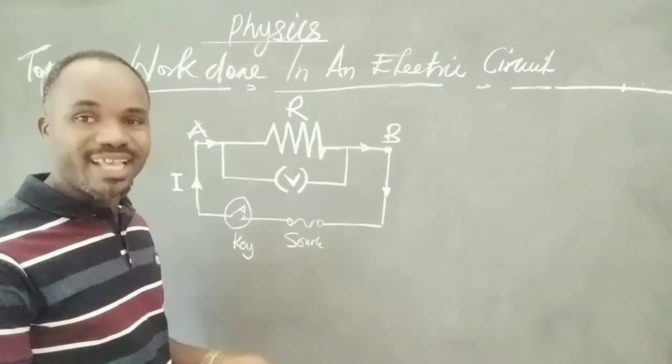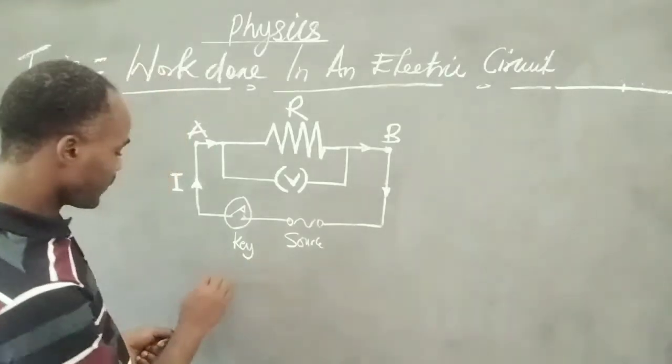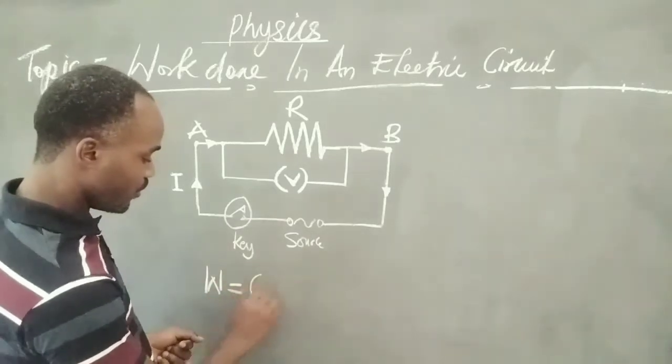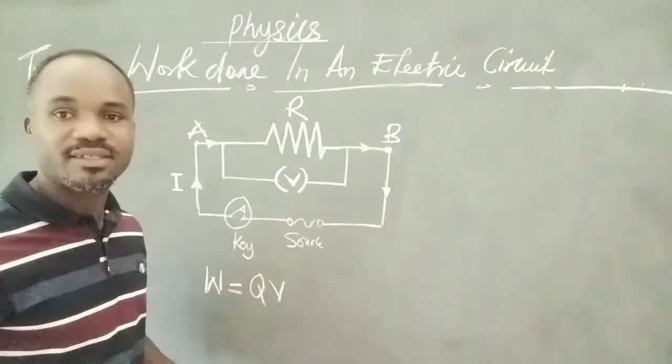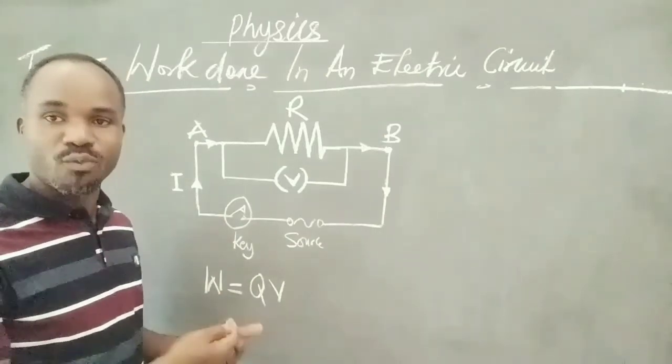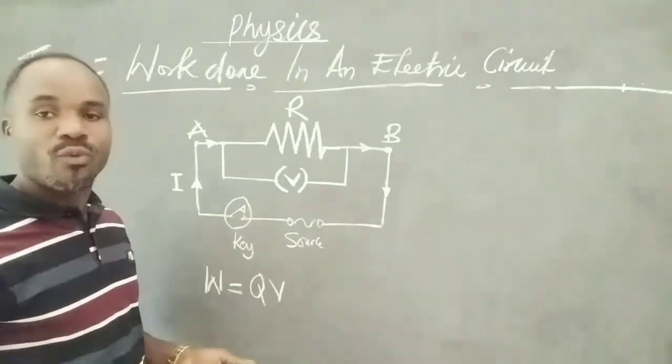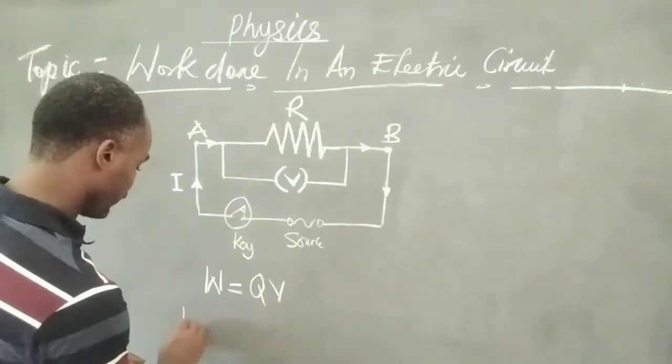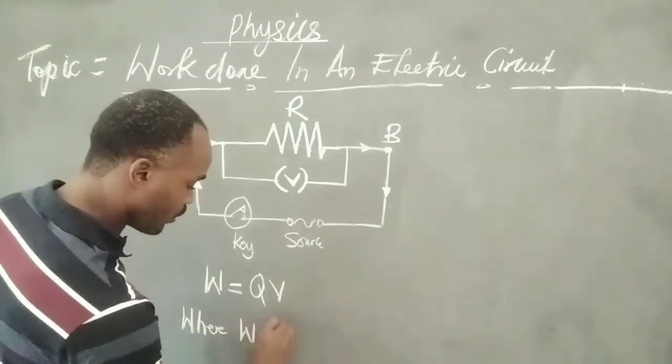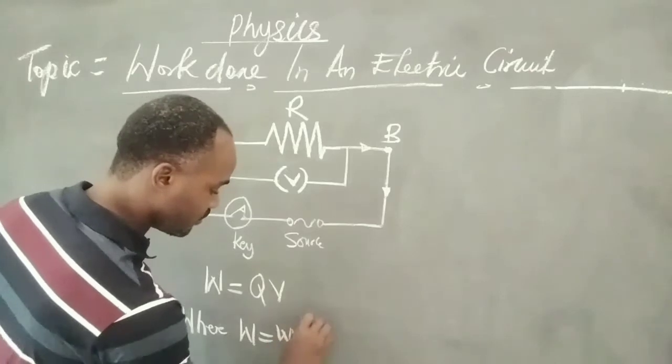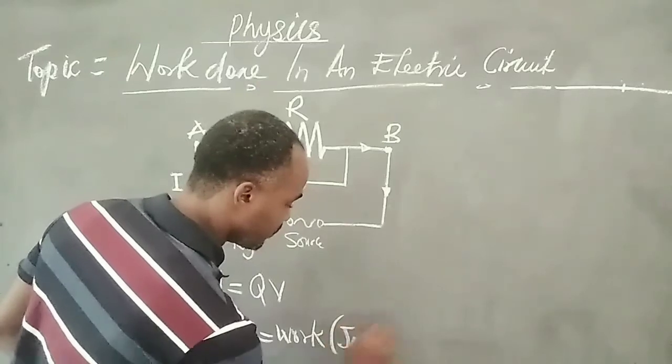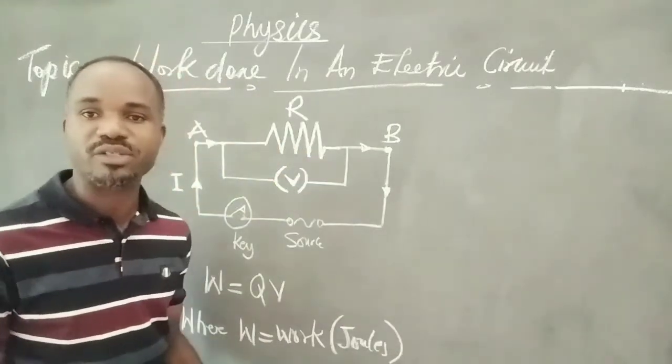That work done is mathematically represented as W is equal to QV. That is the mathematical representation of this work done. So where W is equal to work measured in joules.